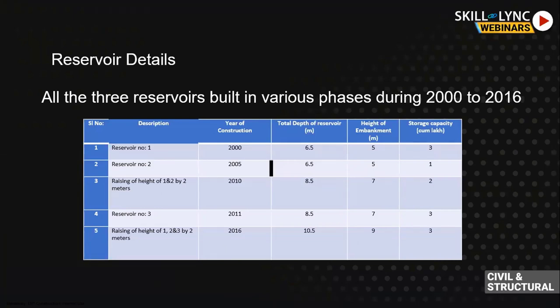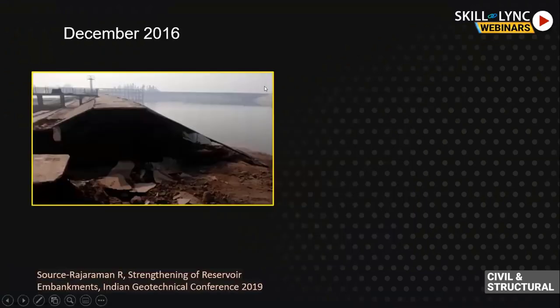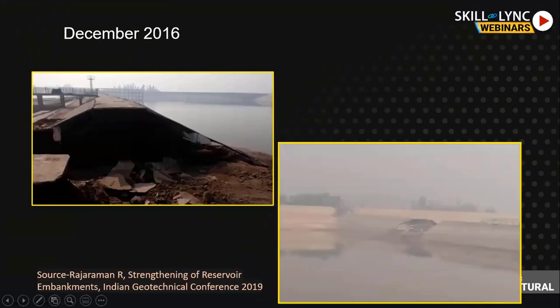We studied the history and phasing of the embankments. Construction year was 2000 with embankment height 6.5 meters. In 2005 another reservoir was constructed. In 2010 the height increased to 8.5 meters. In 2011 another reservoir of 8.5 meters was constructed. In 2016 the height was again increased to 10.5 meters, and the breach happened in December 2016.